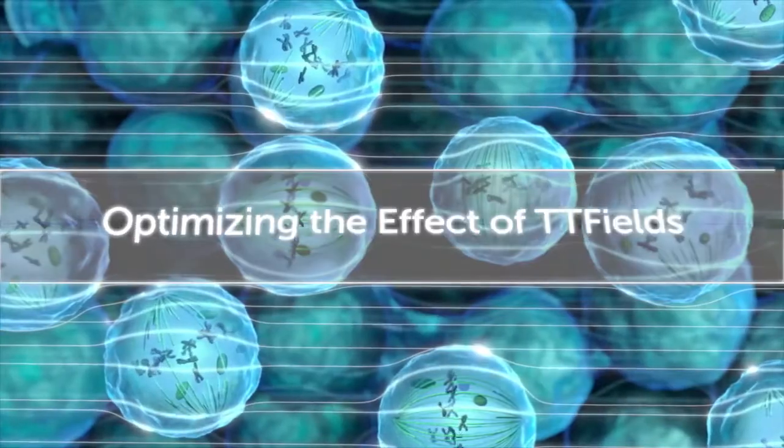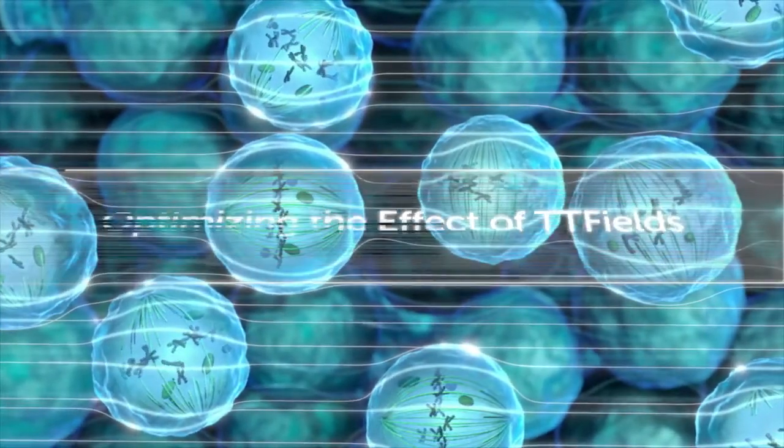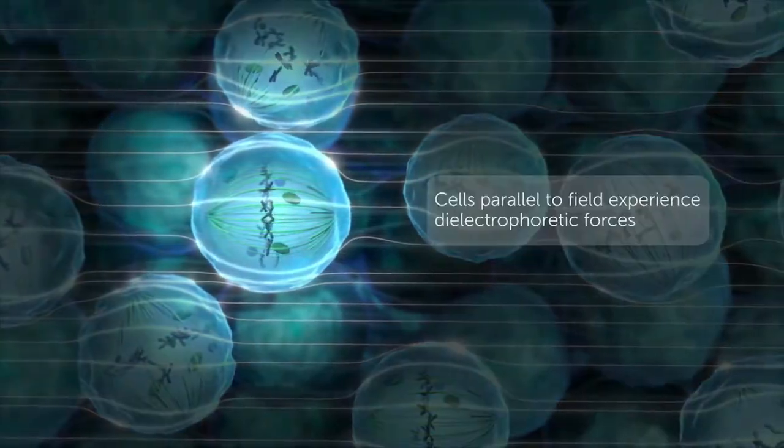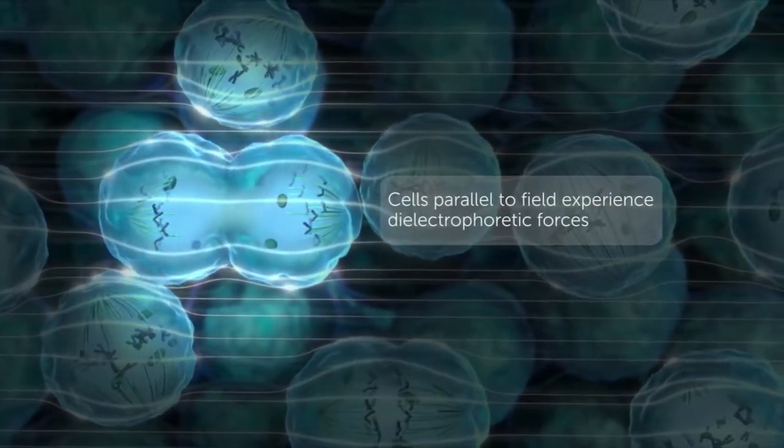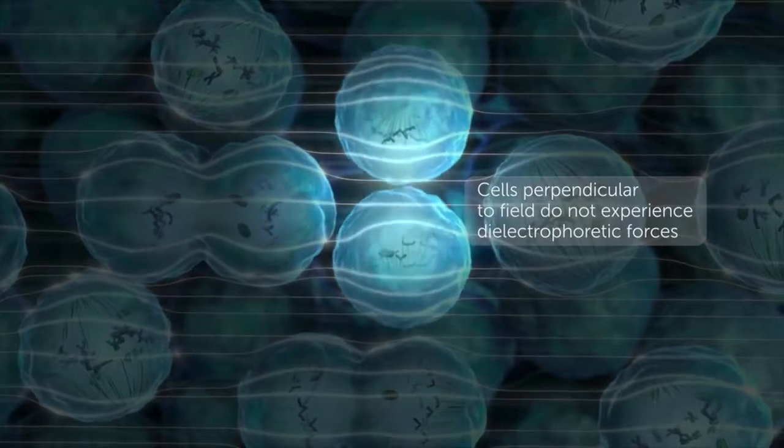The extent of electrical non-uniformity in dividing cells is dependent on the frequency of the TT fields, the electric properties of the cell, and the orientation of the dividing cell relative to the field.